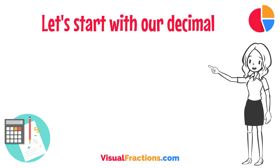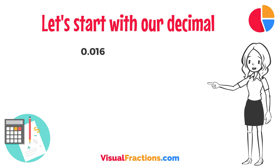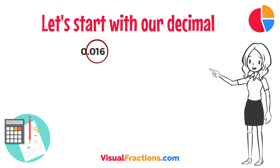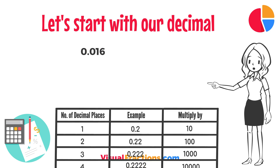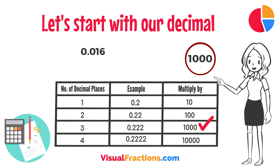Let's start with our decimal, 0.016. Notice there are three digits to the right of the decimal. This places it in the thousandths position.